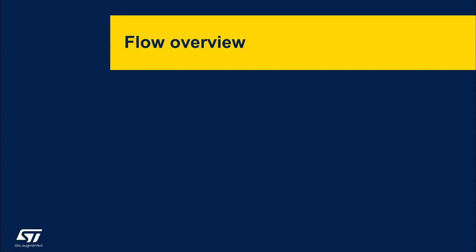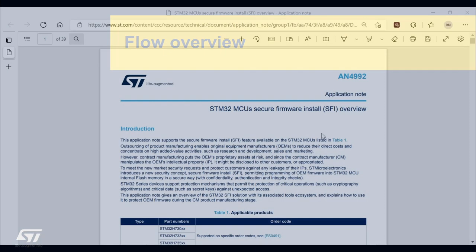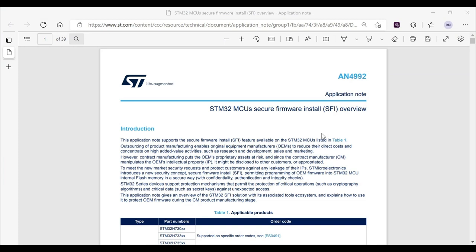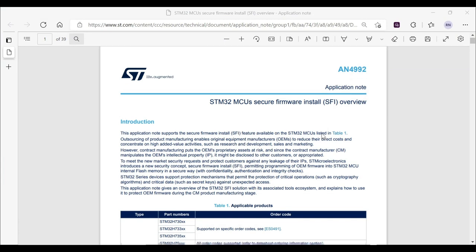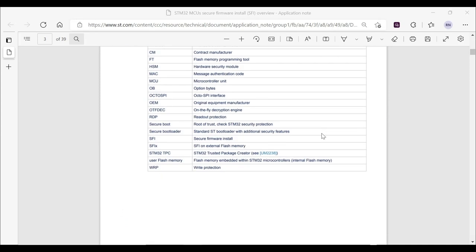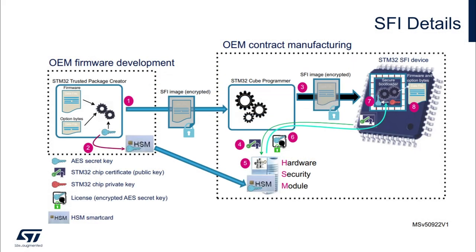Now that we have introduced the tools enabling SFI, we can get a closer look at the whole process. This section is covered in Application Note 4992 — you can refer to it for additional details. The graph shows the steps the SFI process goes through to secure the manufacturing. The first phase happens at the OEM, who is responsible for firmware development, for creating and managing the secret keys used to protect transport of the firmware image, and for creation of the SFI package.